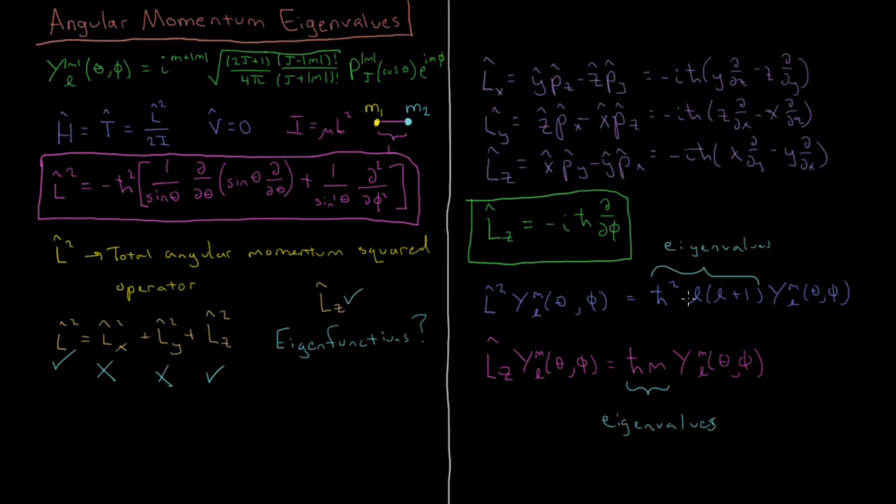which is 6 H bar squared. 4, it's going to give you 12 H bar squared, etc. So that's how you calculate what the angular momentum of a system is for a rigid rotor, depending on what its quantum numbers are.